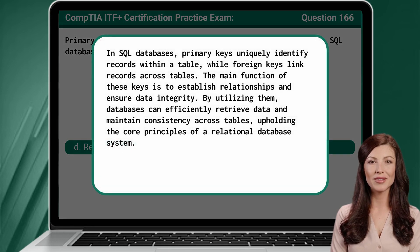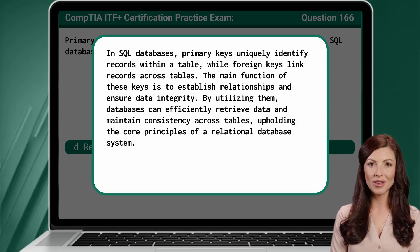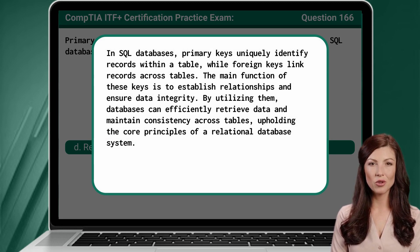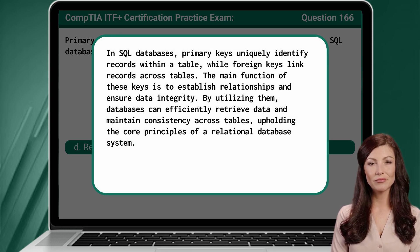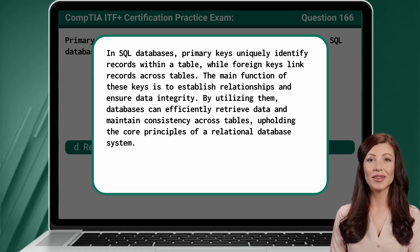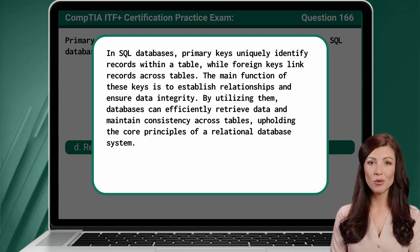In SQL databases, primary keys uniquely identify records within a table, while foreign keys link records across tables. The main function of these keys is to establish relationships and ensure data integrity. By utilizing them, databases can efficiently retrieve data and maintain consistency across tables, upholding the core principles of a relational database system.